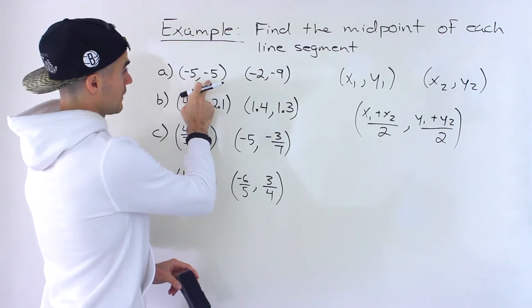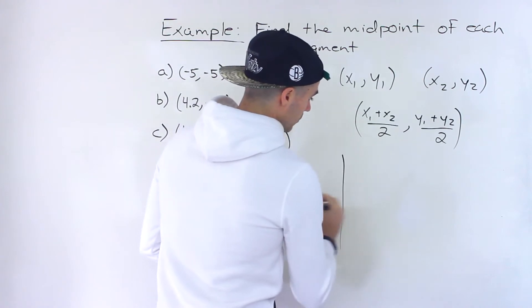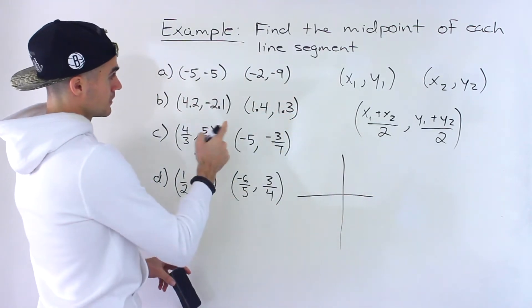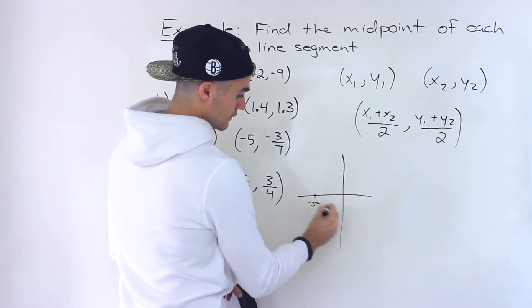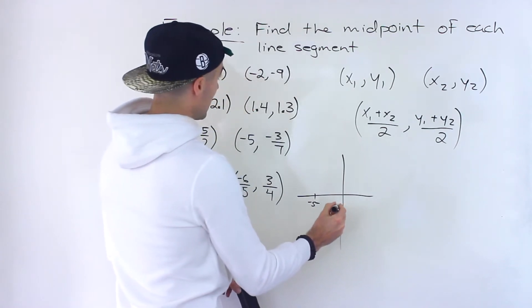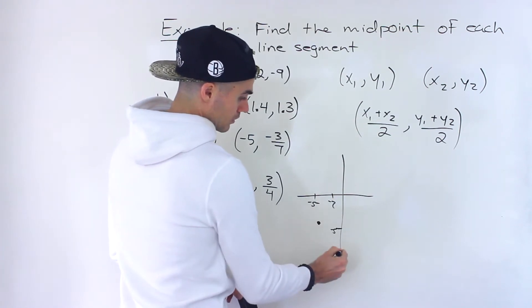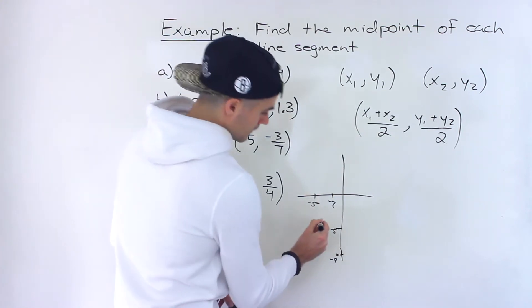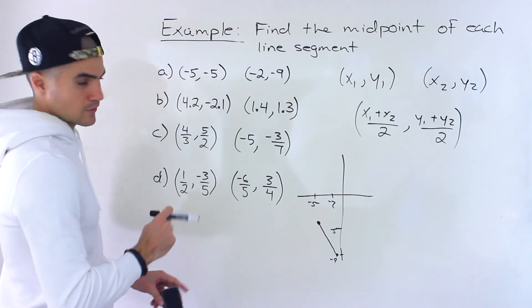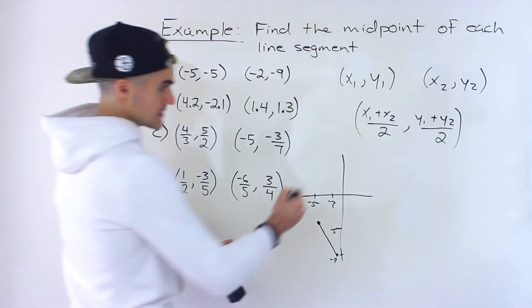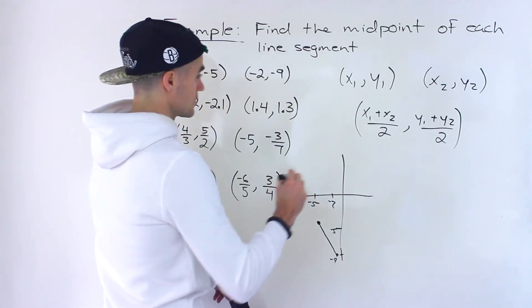Starting with part A, we have the points (-5, -5) and (-2, -9). Sometimes with points like this, it helps to draw a rough diagram. So (-5, -5) would be over here — an x value of -5, a y value of -5. And (-2, -9) would be like over here. That is the line segment. A rough diagram helps because the midpoint answer should fall in that particular area.